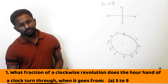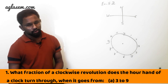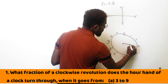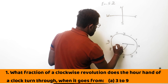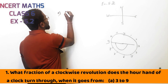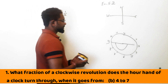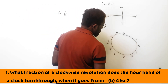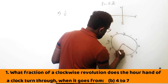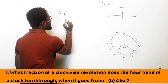Question 1: What fraction of clockwise revolution does the hour hand of a clock make when it goes from 3 to 9? From 3 it is going to 9, so it is making half of the revolution. Next part is 4 to 7. The hand is at 4 and it is going to 7, so this is making 1 by 4 of the revolution.